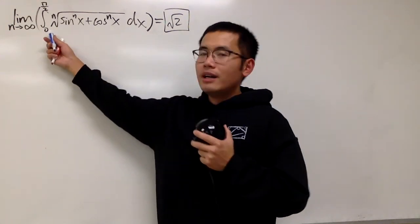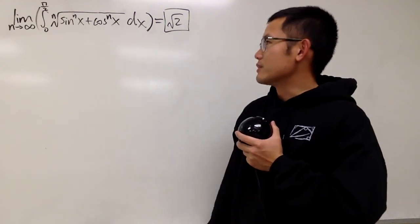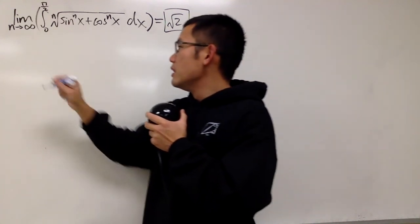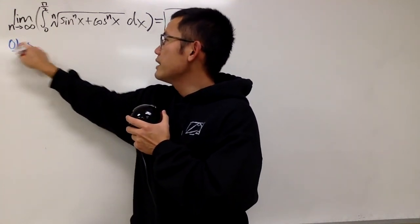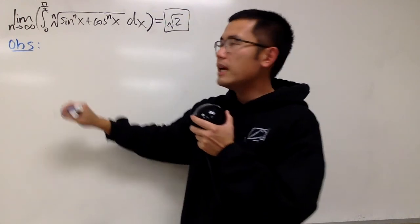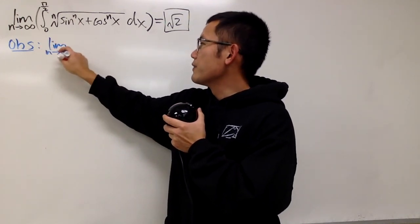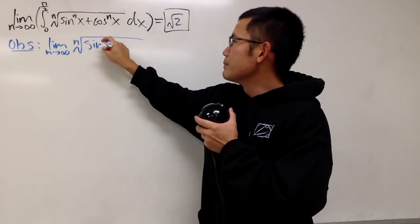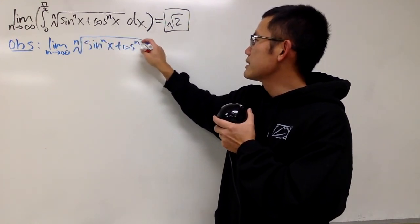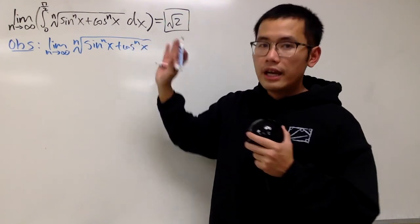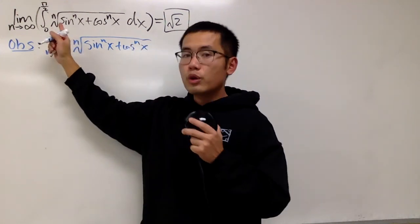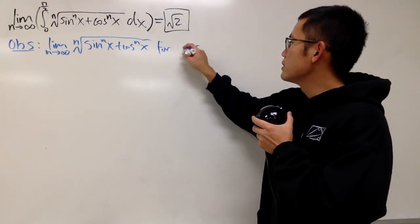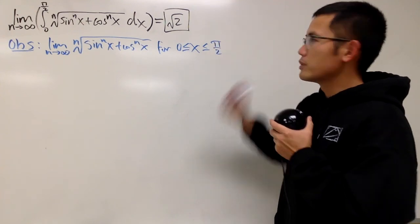I don't really see how we should integrate this first, so why don't we look at the limit as n goes to infinity of the integrand and see what happens. Let's make some observations. We take the limit as n goes to infinity of the nth root of sin^n(x) plus cos^n(x), keeping in mind that x goes from 0 to π/2.